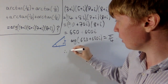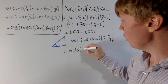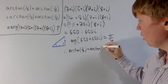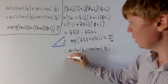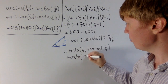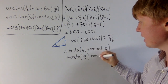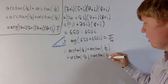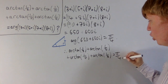So we can conclude that arctan of one-third plus arctan of one-fifth plus arctan of one-seventh plus arctan of one-eighth is indeed equal to pi over four. A really nice, satisfying identity.